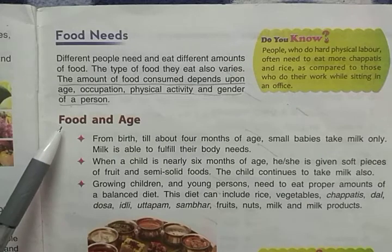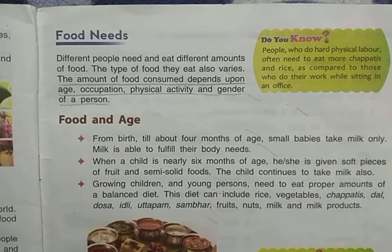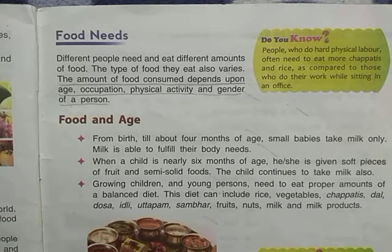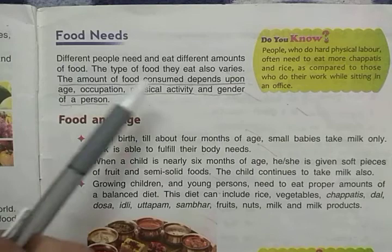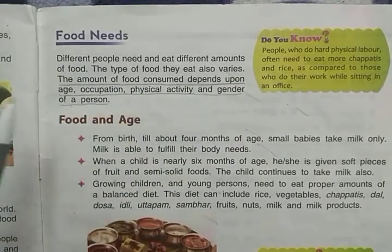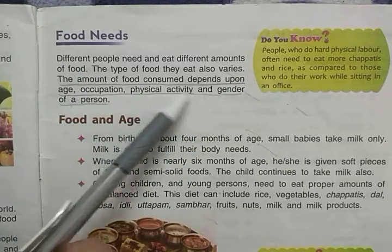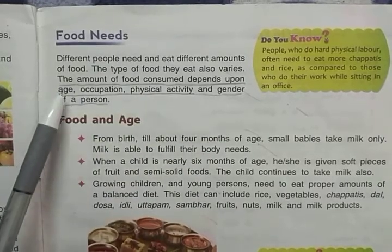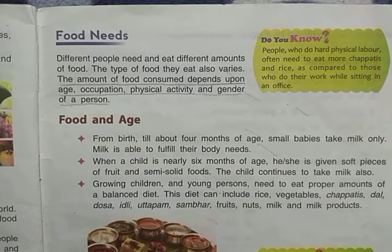Now, food and age — how are food and age related to each other? We have discussed that food consumption depends on age, occupation, physical activity, and gender. Now we will discuss how food consumption depends on age.